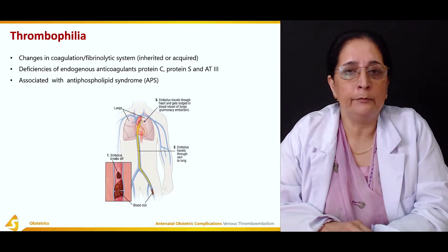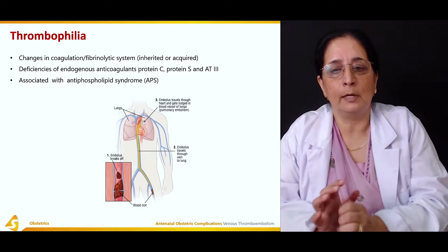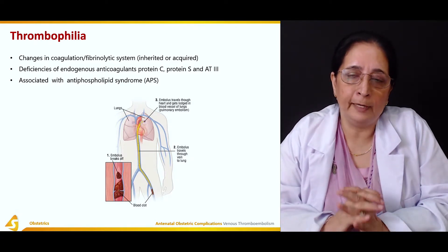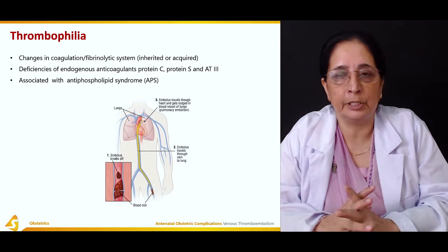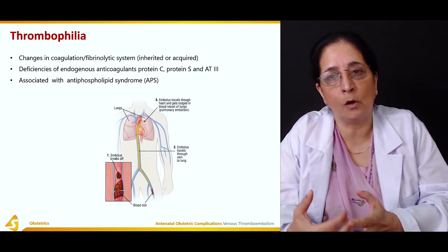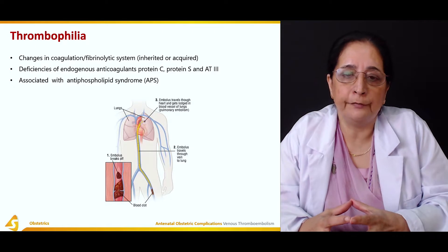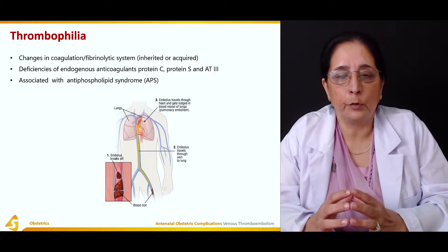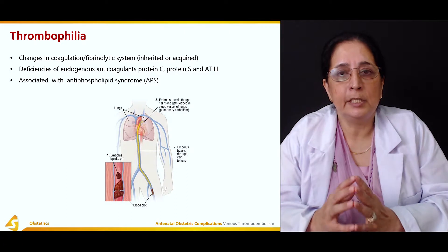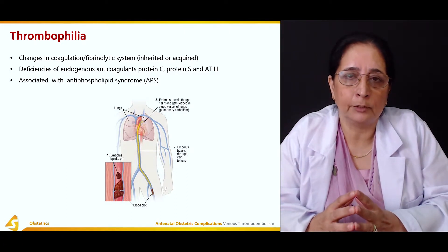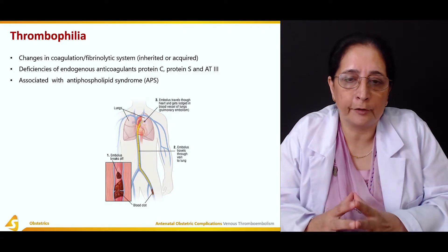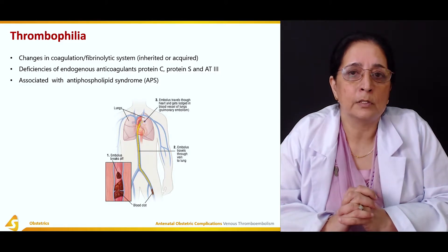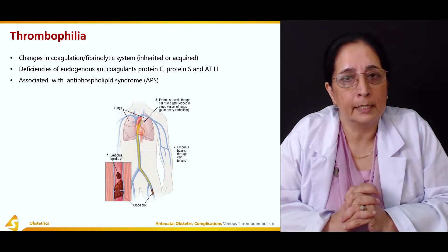Thrombophilia is also associated with antiphospholipid syndrome. It is a condition that can be congenital or acquired, due to deficiency of protein C, protein S, and antithrombin 3, and is associated with antiphospholipid syndrome.